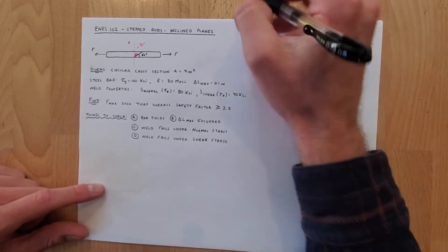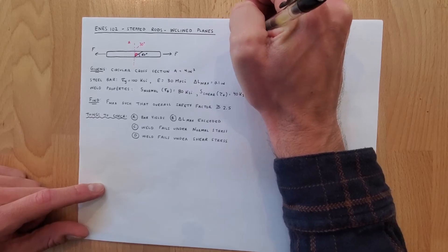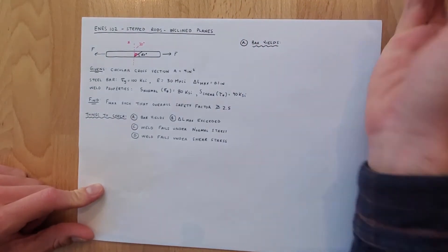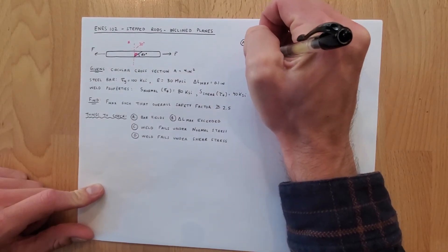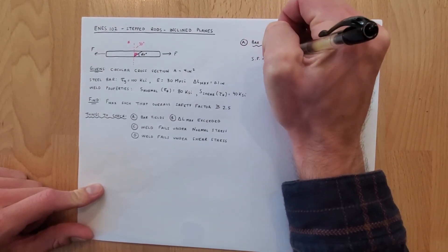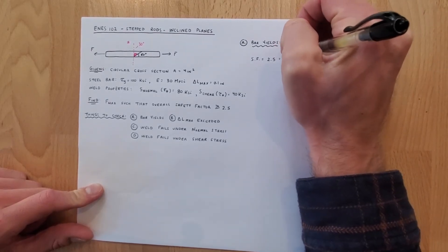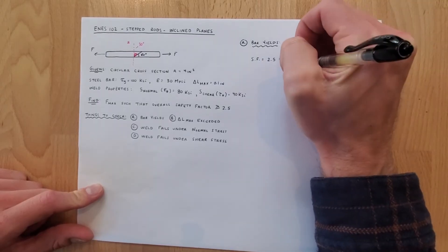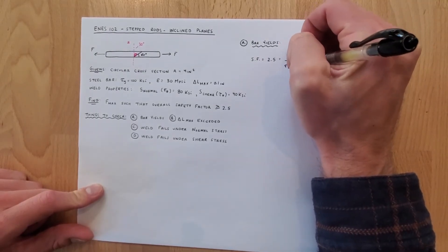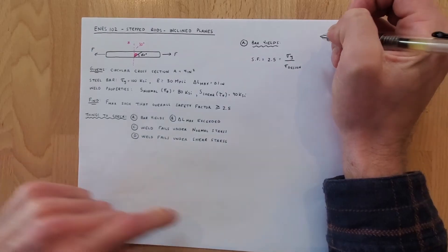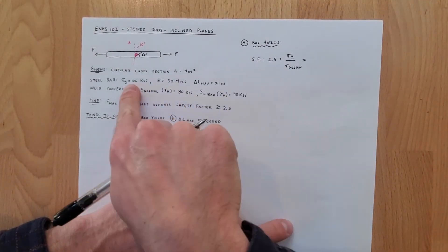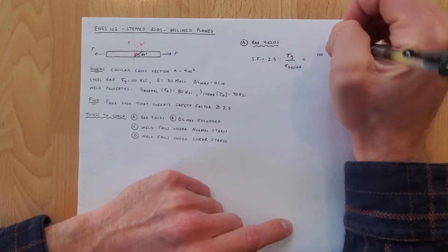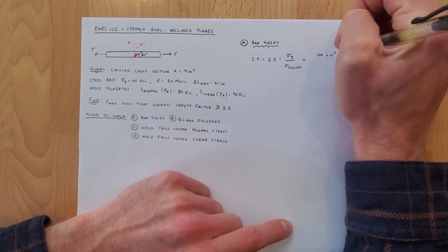Let's check condition a which is that the bar yields. We know that the safety factor that we have to achieve is 2.5 so we set that equal to sigma y over sigma design, our maximum limit over what we're actually experiencing.